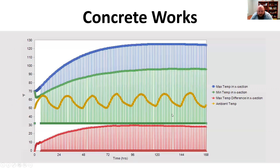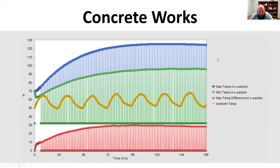When I went into Concrete Works and plugged in a mix, it gave me a maximum temperature — that line way up here — and then the minimum temperature assumed in the section. They also have the ambient temperature you've assumed and the maximum difference of that section. Everything is plotted — that's how they do it in Concrete Works.